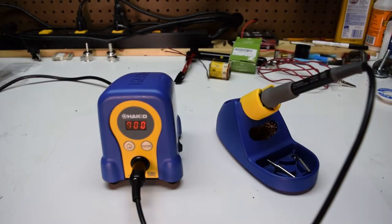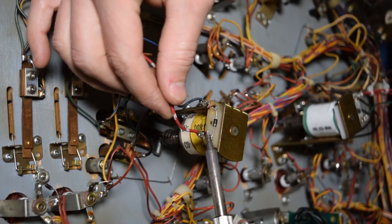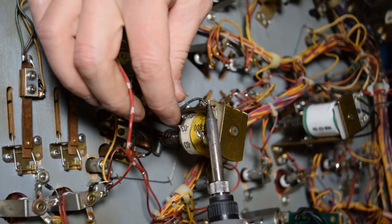When soldering on my pinball machine, I like to set my iron to 700 degrees Fahrenheit. With a little solder on the tip of your iron, remove the two wires from the coil terminals.